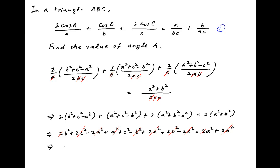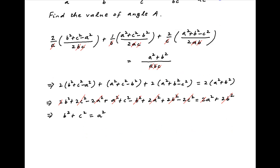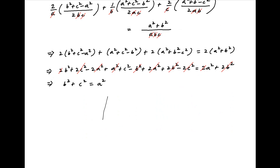2b² cancels across both sides and the whole equation simplifies to b² + c² = a². Now we draw out triangle ABC.